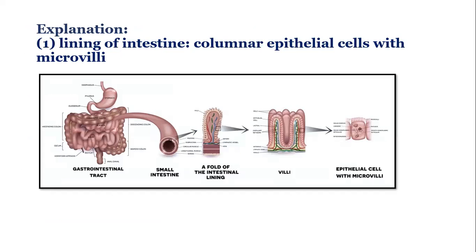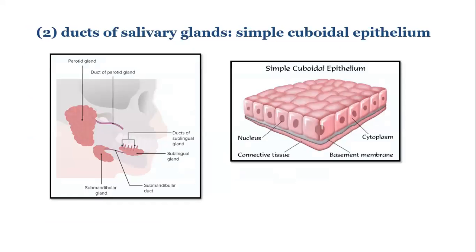The lining of the intestine is made of columnar epithelial cells. The small intestine has evaginations in the form of finger-like projections called villi. A segment of microvilli with columnar epithelium is shown in the diagram.